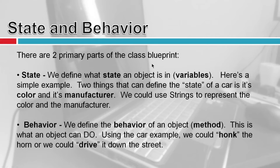There are two primary parts of this blueprint. Just like a real blueprint, you don't actually have a house or a car made out of a blueprint. You use blueprints to plan how objects are designed and their characteristics — they aren't the actual thing. When you write a class, that's all it is: instructions on how the computer can build an object.